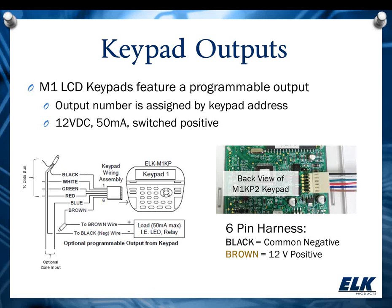You can see here on the screen we have a small diagram showing you coming off of the keypad harness. The output is going to be your brown wire, and you're going to use your black wire as a common negative. So when you're hooking that up to maybe an LED or a relay, your brown is your positive and your black is going to be your common negative.